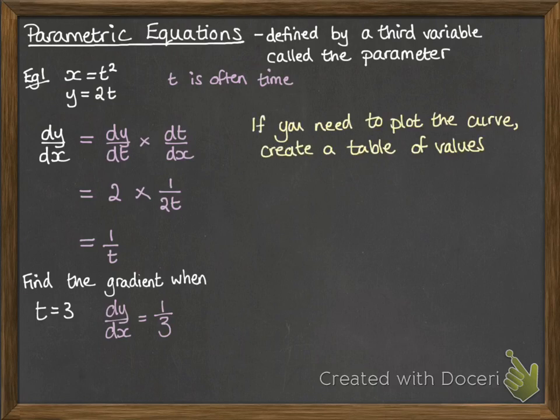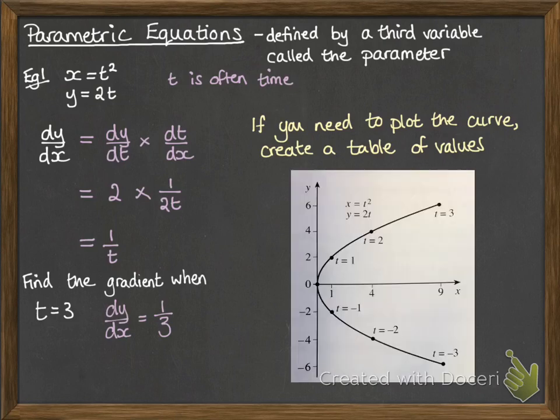Now if you need to actually plot this curve of x equals t squared and y equals 2t, then you would create a table of values. So you'd start with values for t: 0, 1, 2, 3 and so on, and then work out what x would be and what y would be to get your pairs of coordinates. So you'd end up with something like this for this pair here where x equals t squared and y equals 2t.